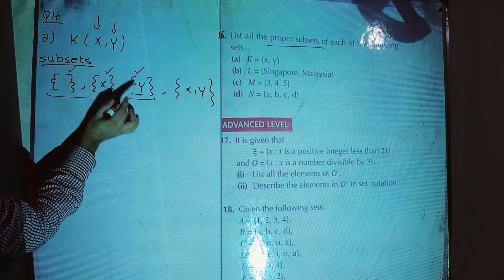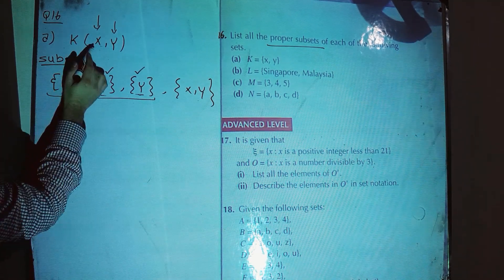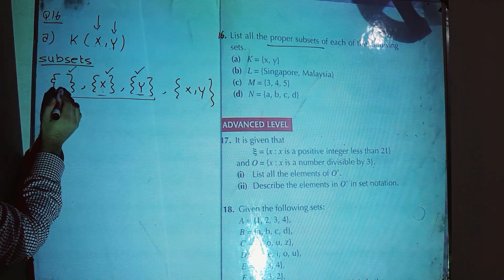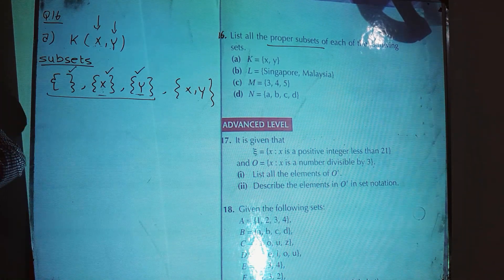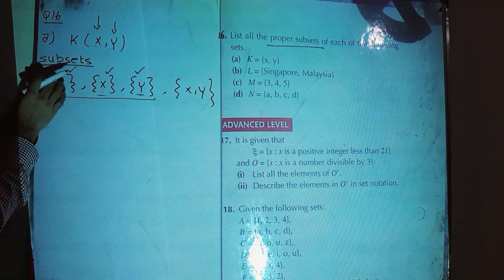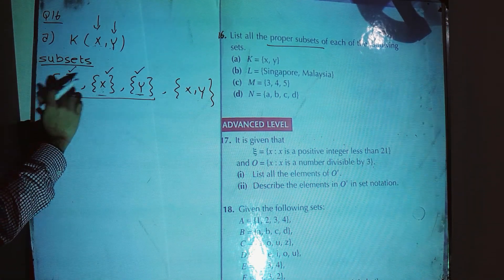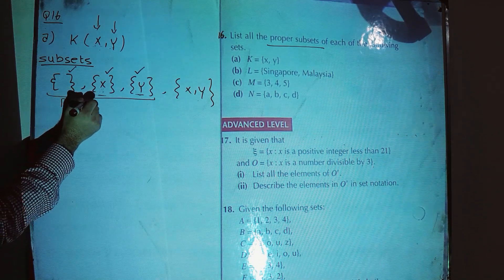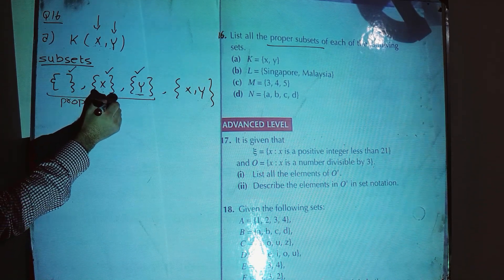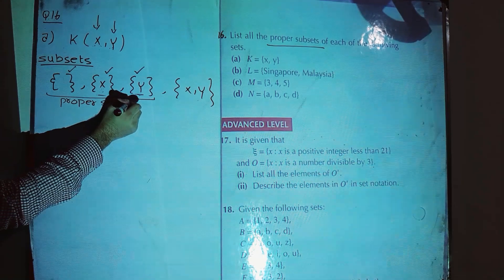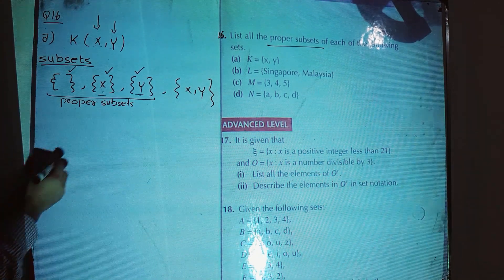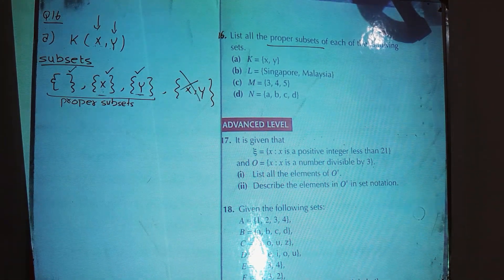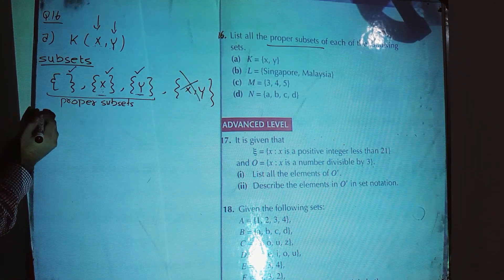For the empty set, K has both x and y which are not present in it. So these three are proper subsets, while {x, y} — which equals K itself — is not a proper subset.